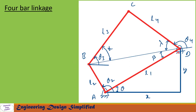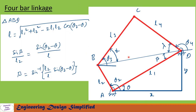Now let us draw a line from B to D, calling this angle beta, this angle lambda, and the angle from here to this line is alpha. Let us call the length of line B to D as L. From triangle ABD, since this angle is theta and angle from here is theta 2, the angle from this line to this line will be theta 2 minus theta. L can be found using the cosine rule: L equals square root of L1 squared plus L2 squared minus 2·L1·L2·cos(theta 2 minus theta).